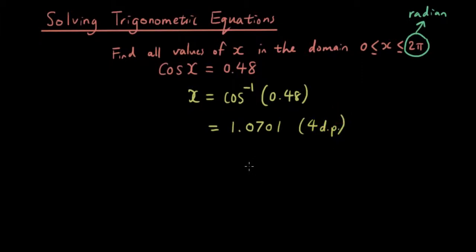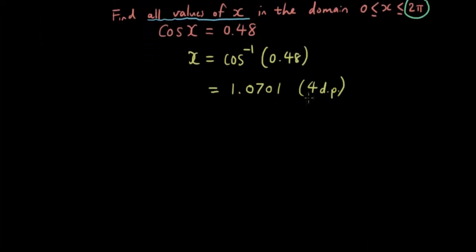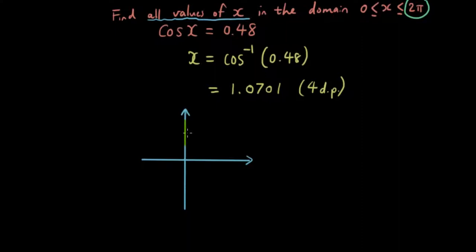Okay, now let's have a look at the question again. It says find all values of x, so that means there could be more than one solution. This could be one of the solutions, but how do we go about finding the next solution? So let's draw our little unit circle and see if we can derive anything from that.